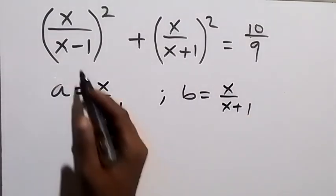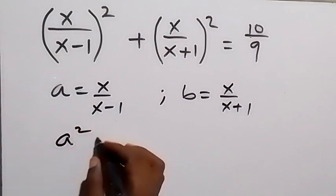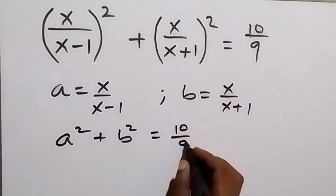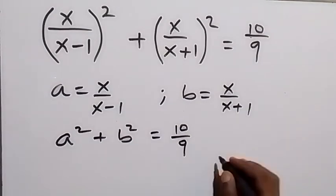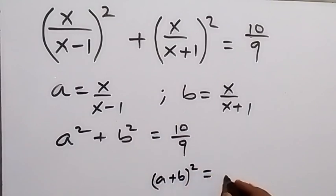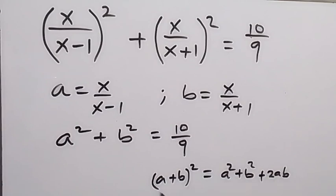Then we can write this equation again in terms of a and b: a² + b² = 10/9. We can also write a² + b² in another way using the identity that (a+b)² expanded equals a² + b² + 2ab. So we can take 2ab to this side.